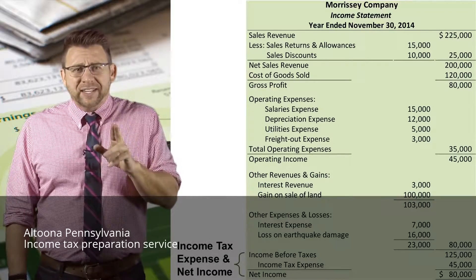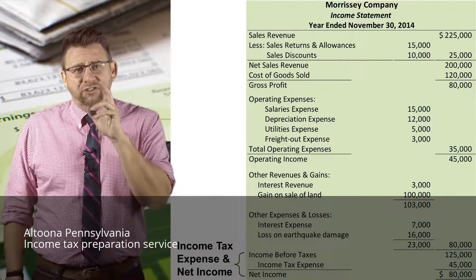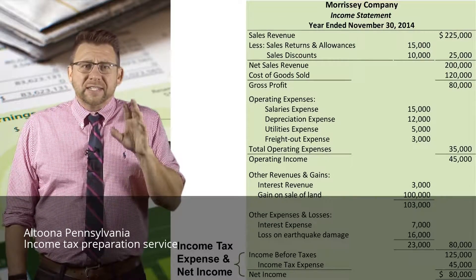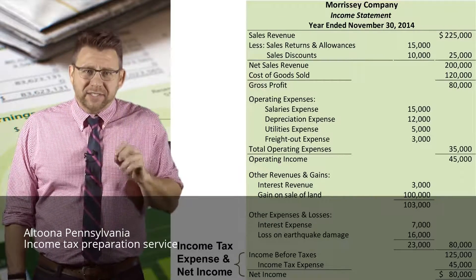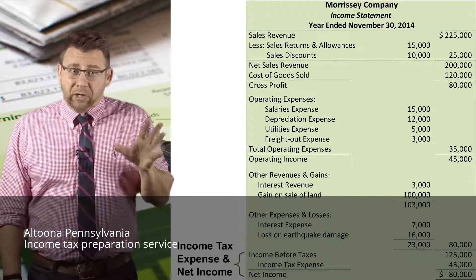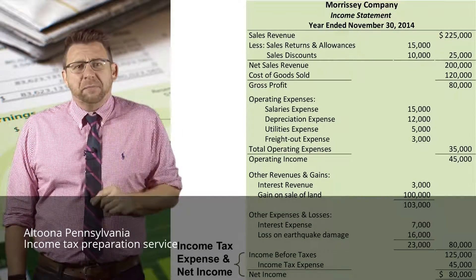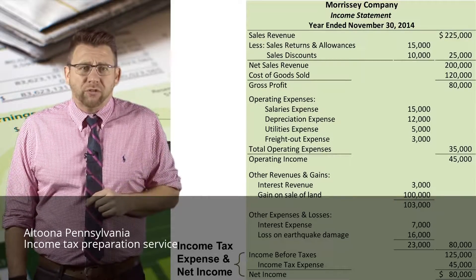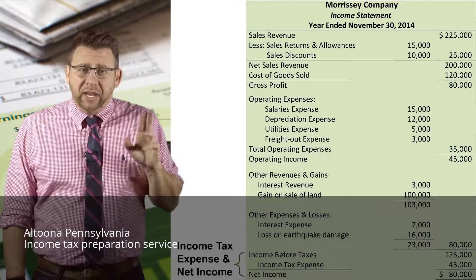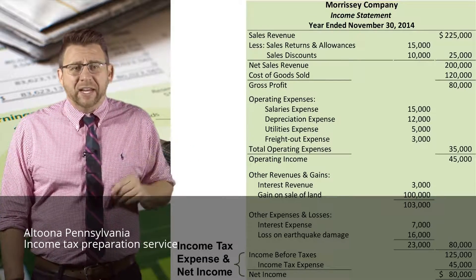The final section before we arrive at net income — or at least the final section for an accounting principles course — is the income tax expense section. This expense is reported separately from all other expenses because it's the expense that managers have the least control over. Income tax expense is deducted from income before taxes to arrive at net income.